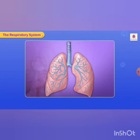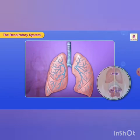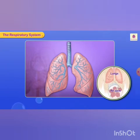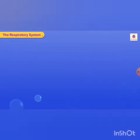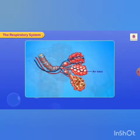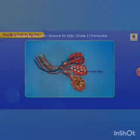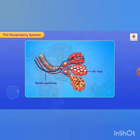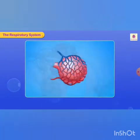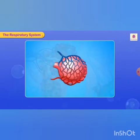The lungs are made up of thousands of air sacs which look like bunches of grapes. Each air sac is surrounded by capillaries. There is an exchange of gases between the air sacs and blood capillaries in the lungs.